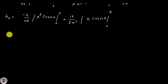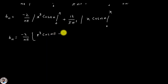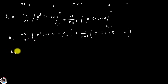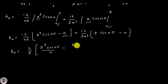Substituting the upper limit π and lower limit 0, we get bₙ = -(2/nπ)(π³ cos(nπ) - 0) + (12/πn³)(π cos(nπ) - 0). Taking (2/π) as common gives bₙ = (2/π)[π³ cos(nπ)/n - 6π cos(nπ)/n³].